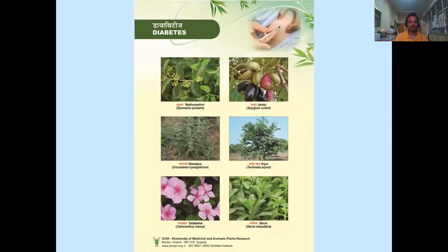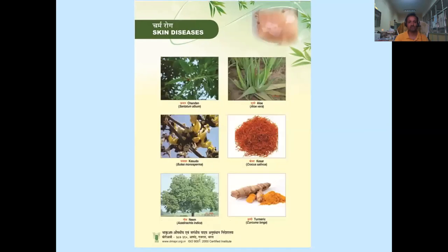For diabetes, there are many medicinal plants: Madunashini, Jambu, Karela, Arjun, Sadabahar and Stevia have been extensively used in controlling diabetes. For skin diseases, plants such as Chandan (Santalum album), Aloe Vera, Kesudu, Kesar, Neem and turmeric have been extensively used in curing skin diseases.